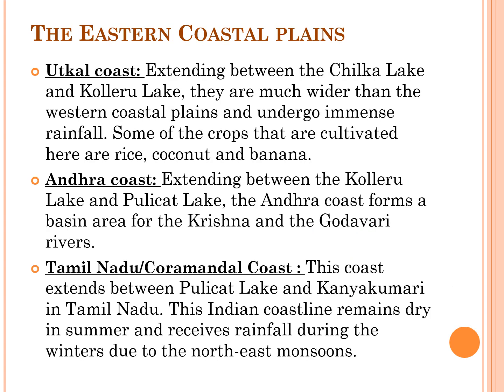The Utkal Coastal Plains extend between Chilka Lake and Kolleru Lake. They are much wider than the Western Coastal Plains and receive immense rainfall. Rice, coconut and banana are some of the important crops cultivated here. The Andhra Coastal Plains extend between Kolleru Lake and Pulicat Lake, forming a basin area for the Krishna and Godavari rivers. The Tamil Nadu or Coromandal coast extends between Pulicat Lake and Kanyakumari. This coastline remains dry in summer and receives rainfall during winters due to the northeast monsoons.